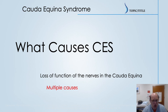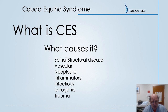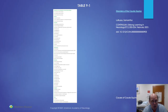What causes cauda equina? There are many different things. As general groups: spinal structural, vascular, neoplastic, inflammatory, infectious, iatrogenic — there are medications that can cause it — and of course trauma. A lot of different things can produce injury to that area of the spine around the cauda equina. This slide shows all the different possibilities — and you can see a lot of different things can do this.